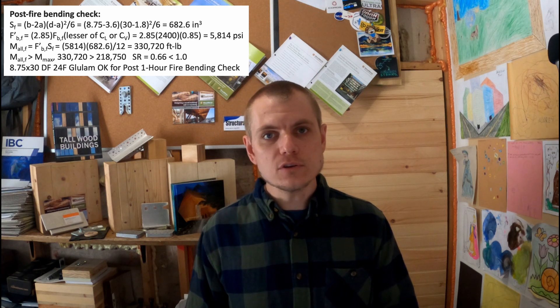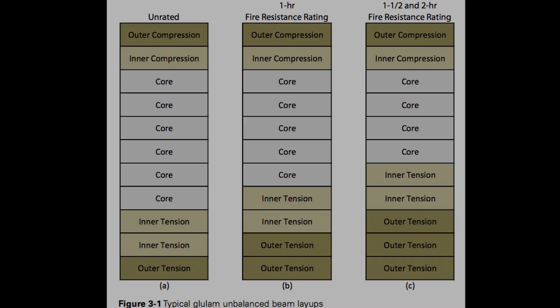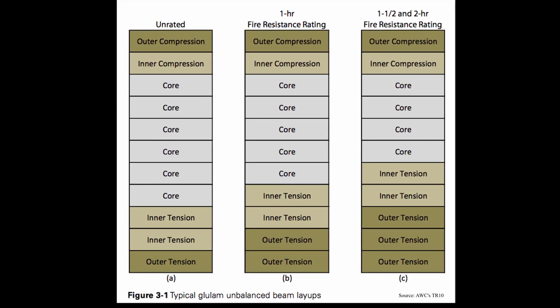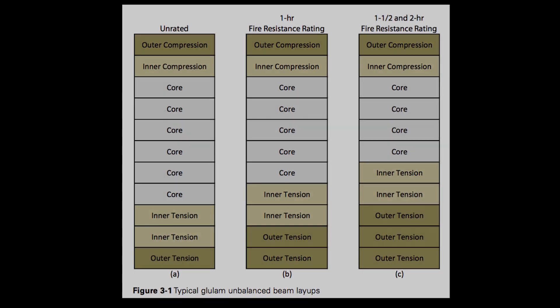This is a unique case — this beam actually has a higher capacity post one-hour fire than it does pre-fire, because of that 2.85 increase on the allowable bending capacity. So we've met the bending check pre-fire, we've met the bending check post one-hour fire, and for bending purposes this beam is adequate. One thing to keep in mind: NDS requires that we substitute core laminations with tension laminations on the bottom of the beam when it's exposed on three surfaces.